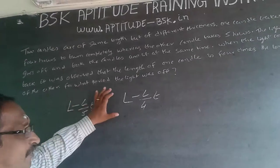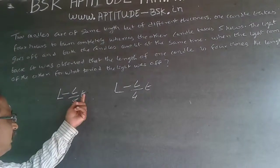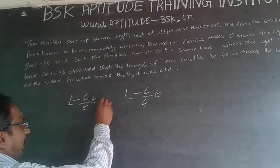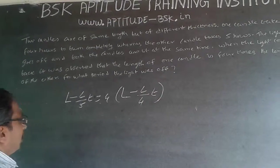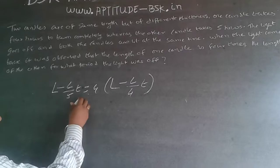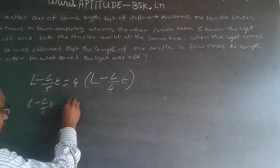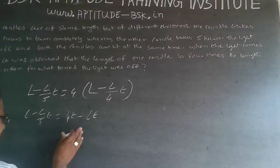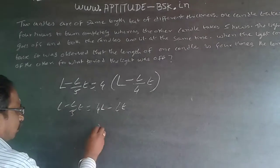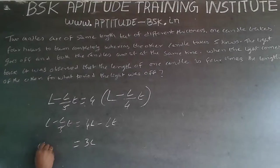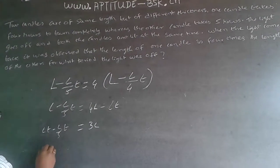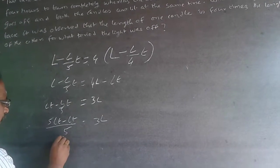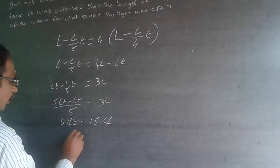The time variable is t. When observed, the thicker candle's remaining length is four times that of the thinner candle. So the equation is: L − (L/5)·t = 4·[L − (L/4)·t]. Expanding: L − Lt/5 = 4L − Lt. Bringing terms together: Lt − Lt/5 = 3L, which gives (5Lt − Lt)/5 = 3L, so 4Lt/5 = 3L.